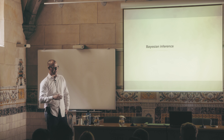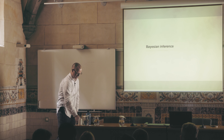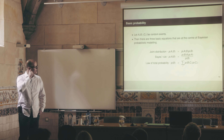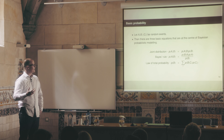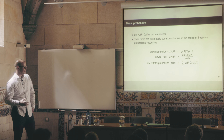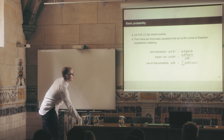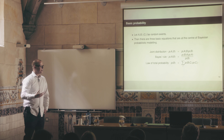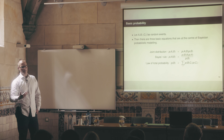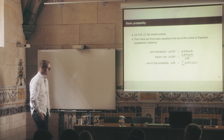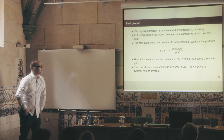Now let's switch gears and get into Bayesian inference — this is how we're going to actually fit our models. There's some basic probability theory that everybody probably knows, but will come up again and again in this talk. There are three basic equations you'll frequently need when building Bayesian probabilistic models: the joint distribution — basically the decomposition of a bivariate distribution into a conditional and an unconditional — then Bayes' rule, which says how to compute one conditional in terms of another, and the law of total probability, which lets you compute a complex probability by decomposing it into conditionals.